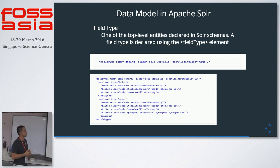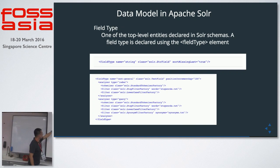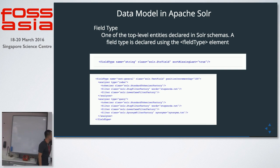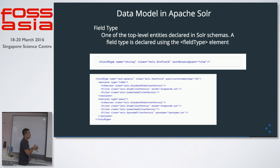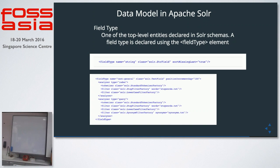The field type is the top-level entity declared in the Solr schema, using the field type elements. Earlier I mentioned the analyzer. In the analyzer, you can change many different analyzer classes in the config file. For example, you can have the lowercase analyzer — so in a query, you want to lowercase all the keywords. Or you can remove stop words, like common English keywords. Stop words are defined in a separate text file, like stopwords.txt. Similarly, for synonym words, you can define them in a separate file like synonyms.txt.